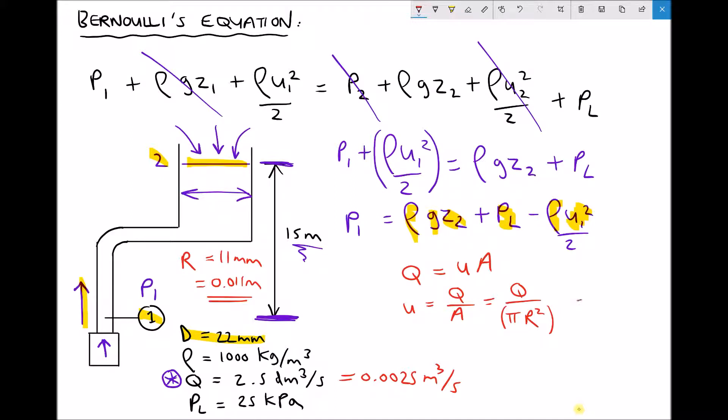So our calculation for the velocity then is the flow rate, 0.0025, divided by pi times the radius squared. And that gives us a velocity at position one equal to 6.5767 metres per second. And that's accurate to four decimal places. So I'm going to add that velocity in the bottom left-hand corner, and then we can carry out our final calculation in order to calculate the pressure on the gauge at position one.